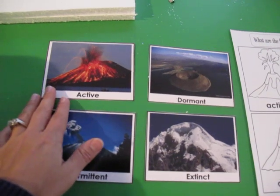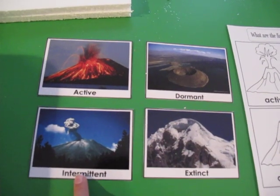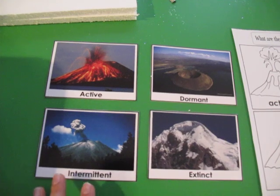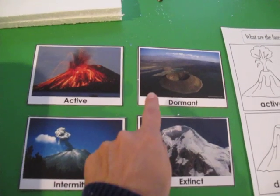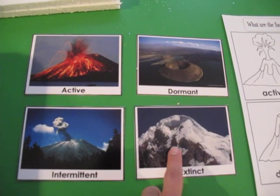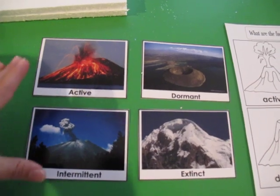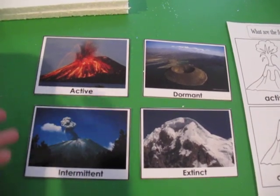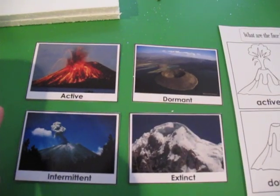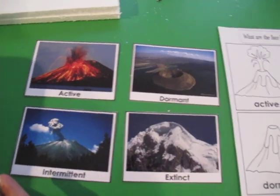We were going to use the pictures here as examples of volcanoes. It doesn't mean that all dormant volcanoes look like this, or that all extinct volcanoes have snow on them, but we're going to use them as visual cues to help us remember the four types of volcanoes.